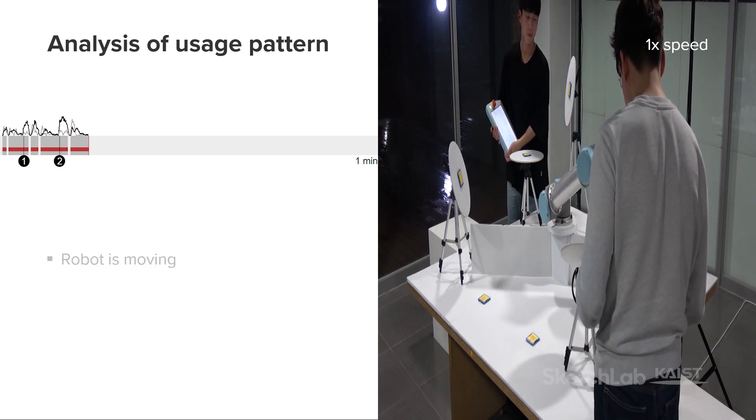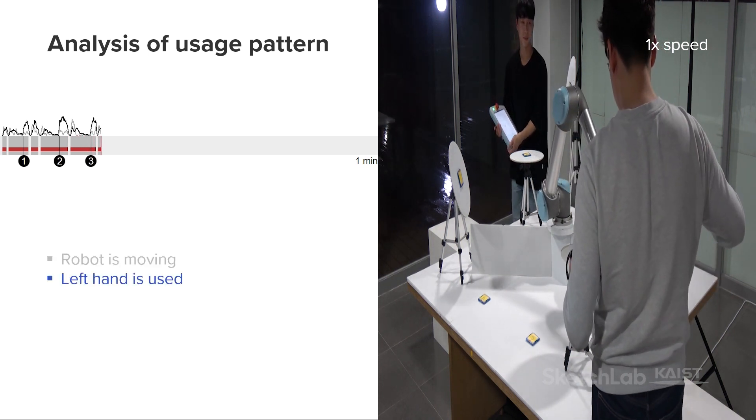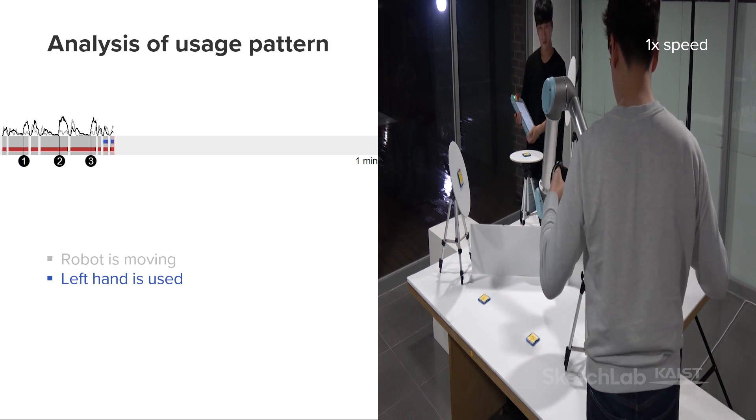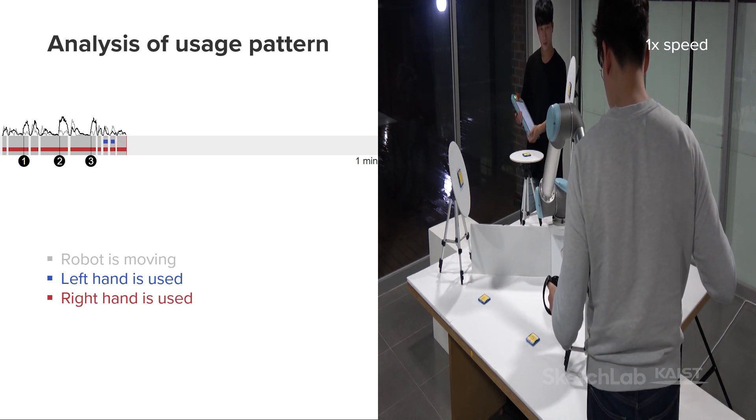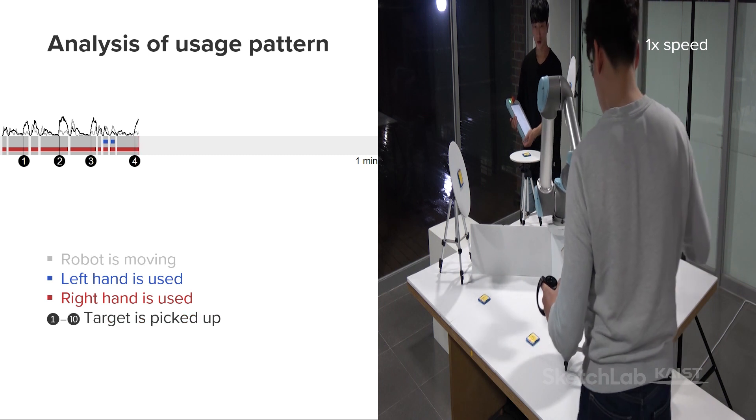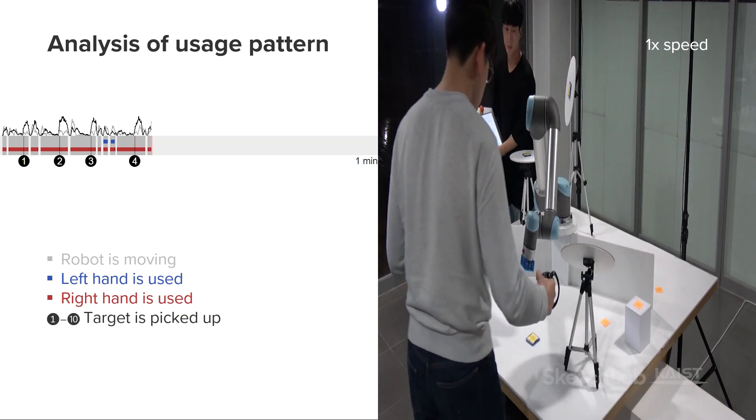The dark gray bars indicate that the robot is moving. The thin blue bars indicate that the left hand is used. The thin red bars indicate that the right hand is used. The numbered circles indicate that the target is picked up.